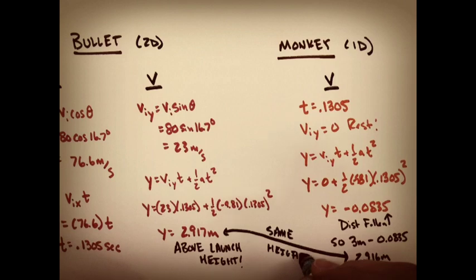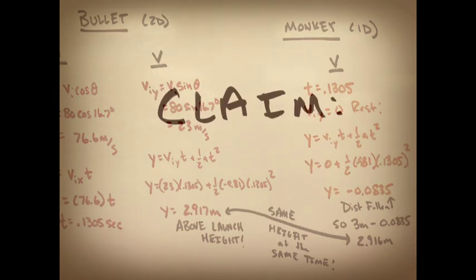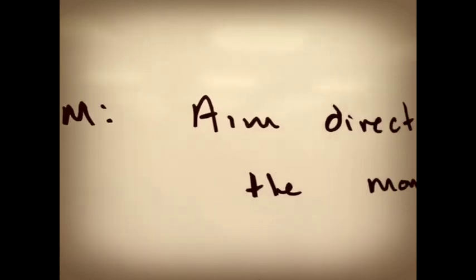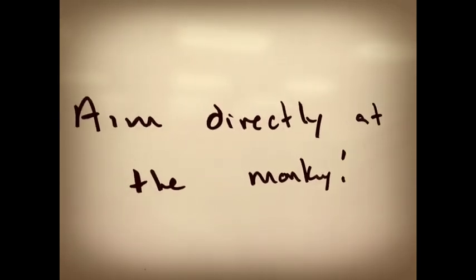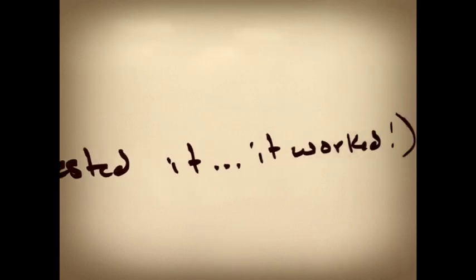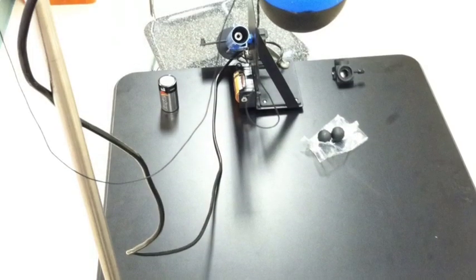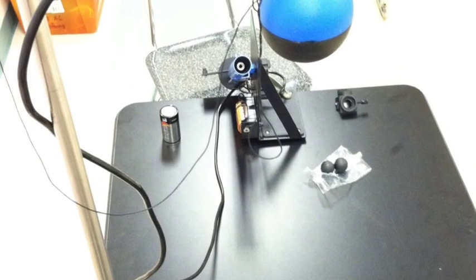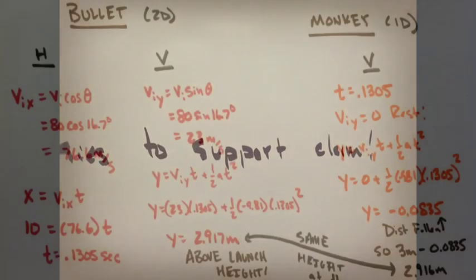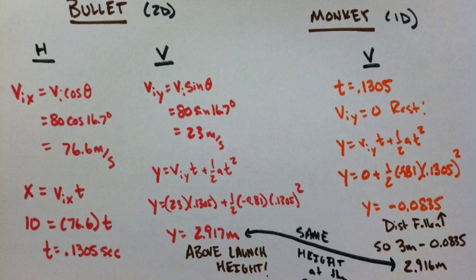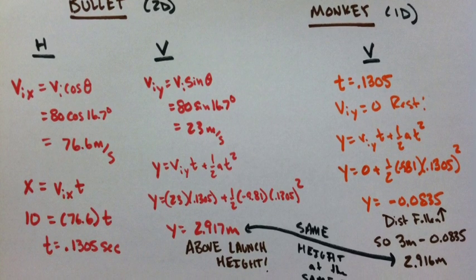So our claim is that we should aim directly at the monkey. Our evidence was supported by our experiment - we shot the projectile and it hit the ball when we aimed directly at it. To connect the evidence to the claim, we use physics to back it up with all of our kinematic equations, placing the bullet and the monkey at the same place.